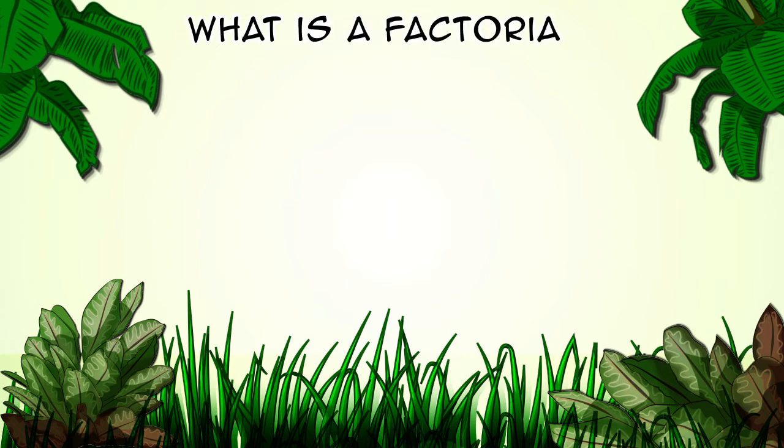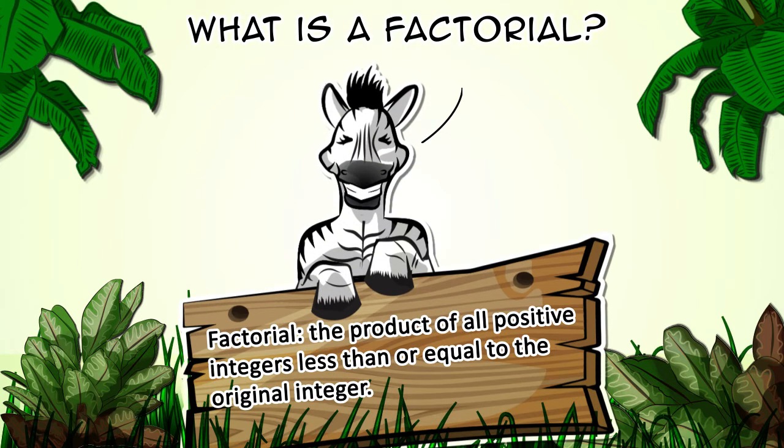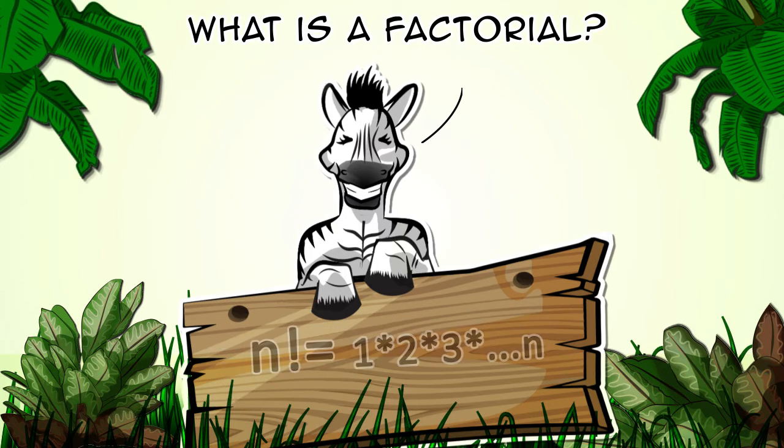Let's start by understanding what a factorial is. A factorial of an integer is defined as the product of all positive integers less than or equal to the original integer. So, the factorial of an integer n is 1 times 2 times 3 and so on until n.